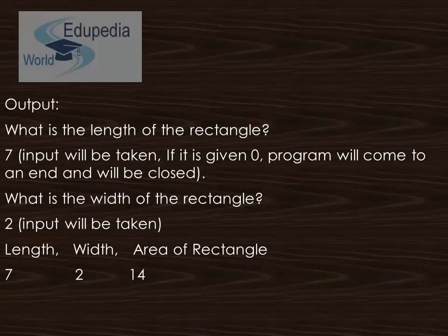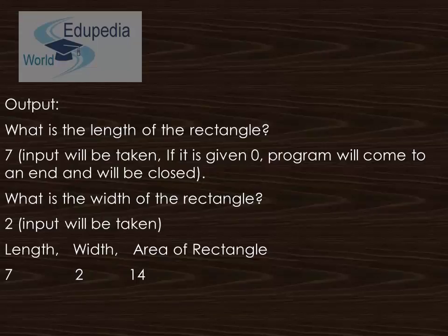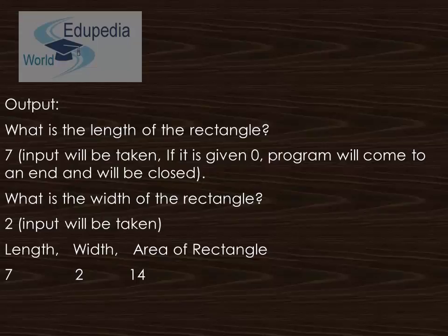The output of this program when running will first prompt: what is the length of the rectangle? If zero is entered, the program ends. Otherwise, it prompts for the width. Once both inputs are given, it displays the length, width, and area of the rectangle as the desired result.